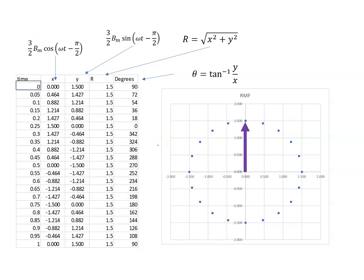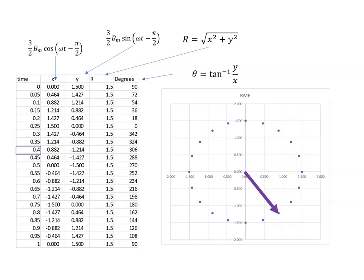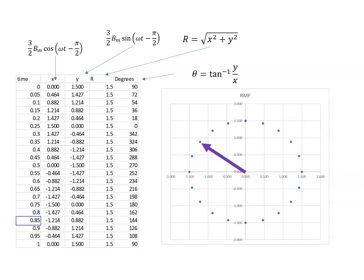Animating that: here at time zero the resultant is at 90 degrees, and as time progresses it rotates around. The resultant at each point in time combines the horizontal and vertical components, and we can see it moving around the whole time. That's how a rotating magnetic field works mathematically.